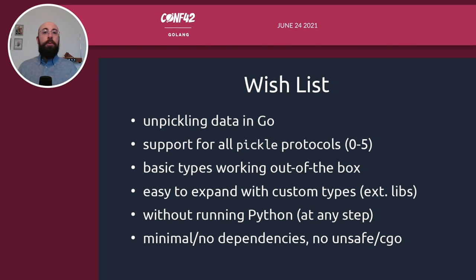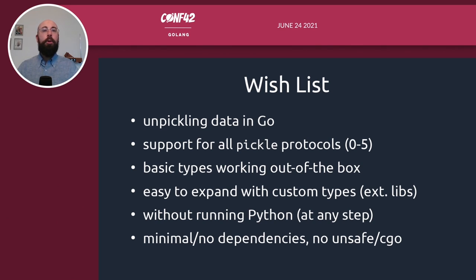A possible solution might have been to write a Python script that would read the initial data and transform it to a format more suitable for being read from Go. But instead, I decided to write a little wishlist. I was wishing for an easy-to-use Go library that would allow me to unpickle data in Go, possibly supporting all Pickle protocols. It should handle out-of-the-box basic simple data types such as integers, floats, strings, and booleans. It should be easy to expand with custom data types or types from external libraries, without having to run Python at any step. And it would be cool if such a library had minimal or no dependencies and avoided unsafe data types or the CGo extension.